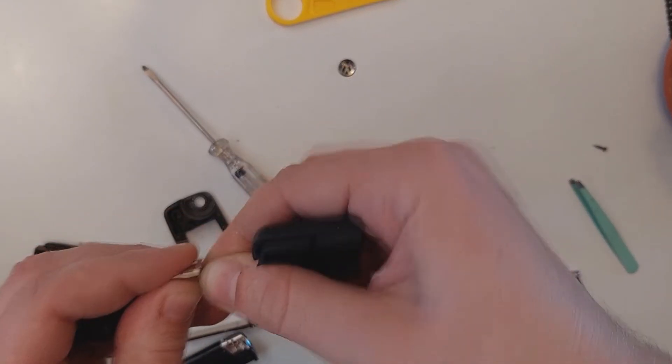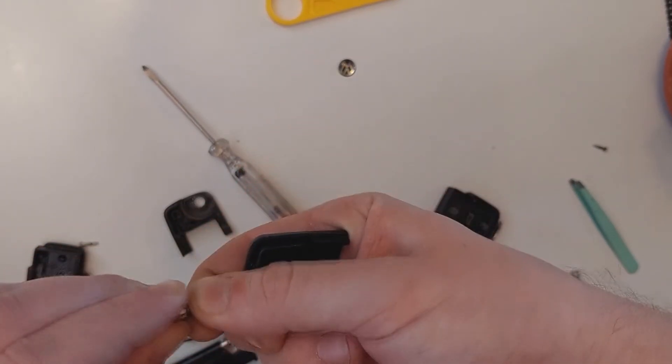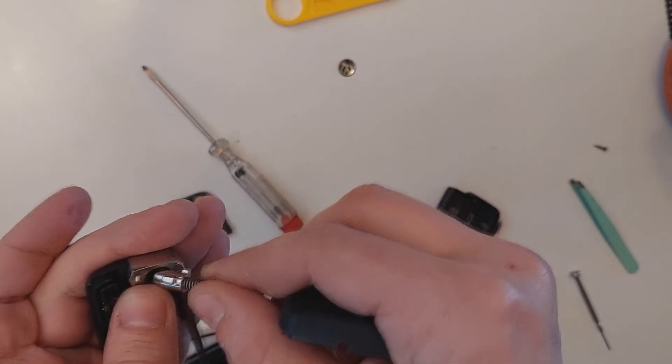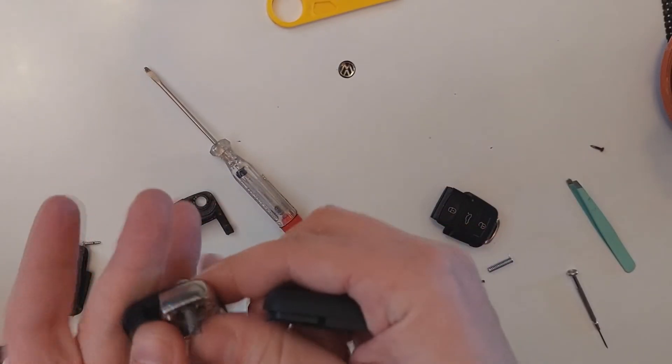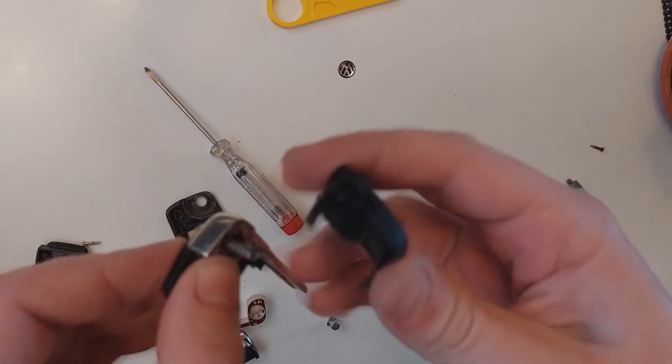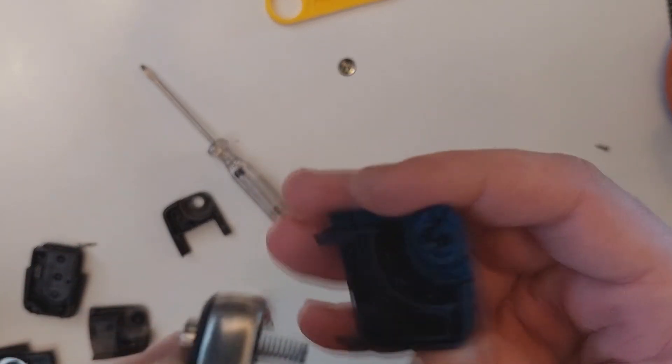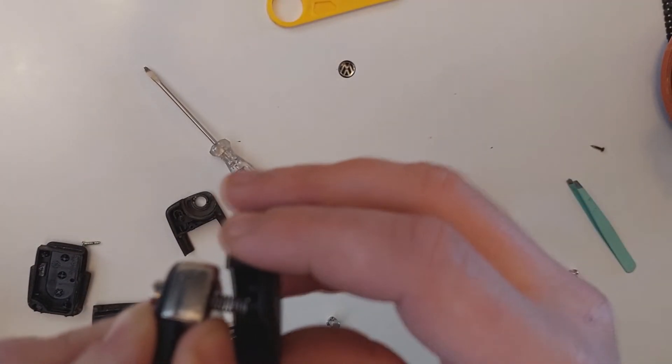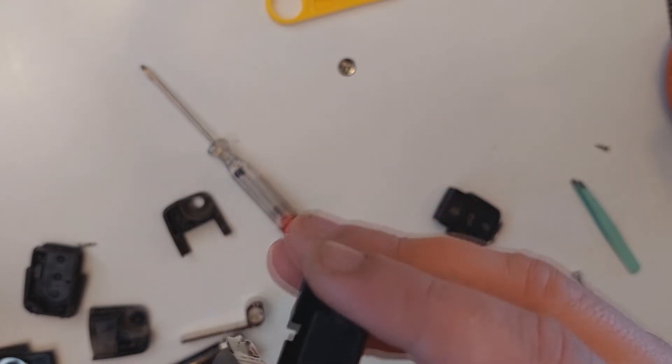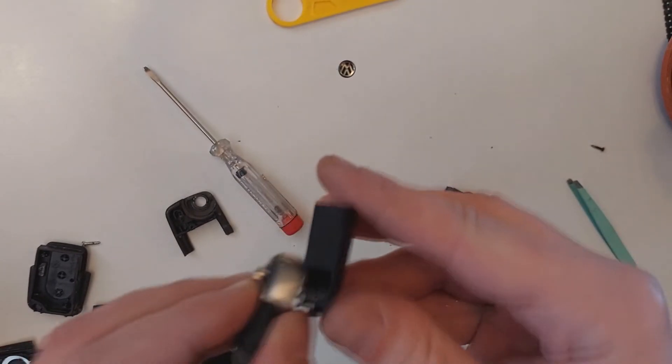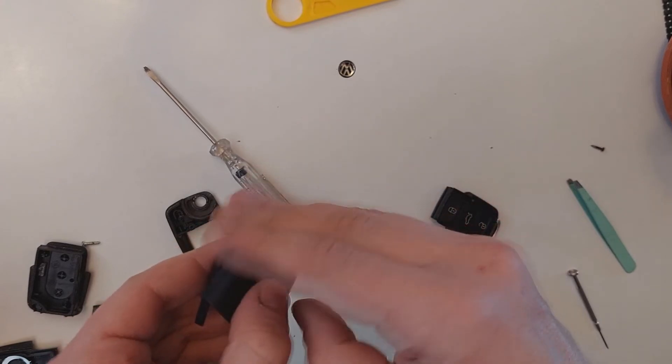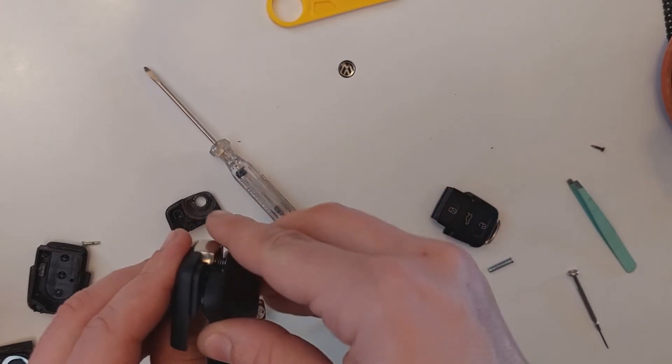Now you need to install the spring in this button and rotate it a couple of times. You need to align the spring with the second part of the key case, then rotate it in the opposite direction one and a half times.